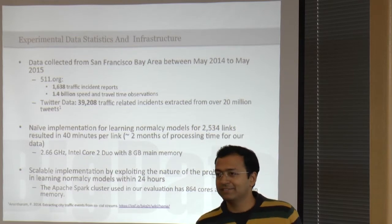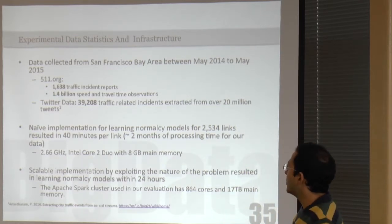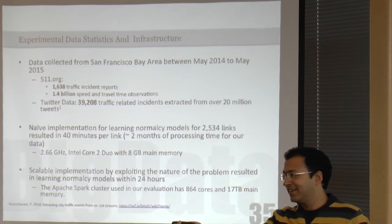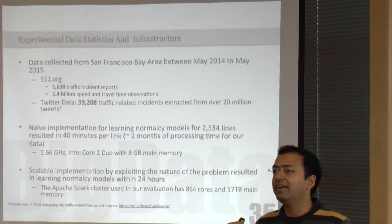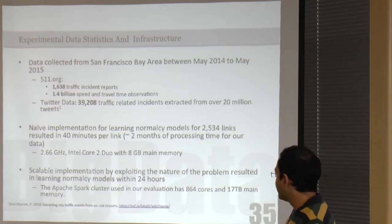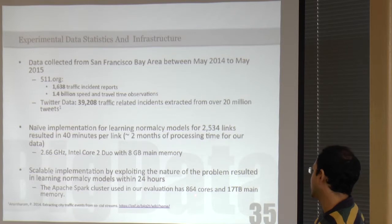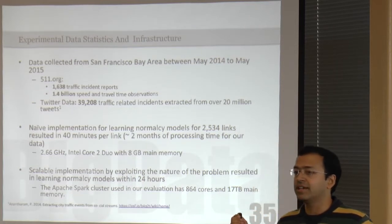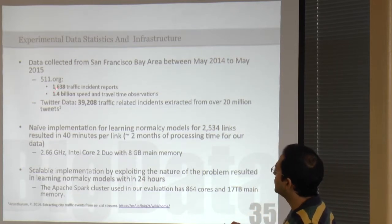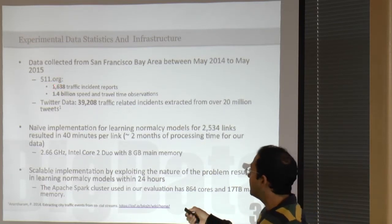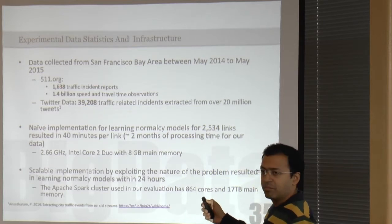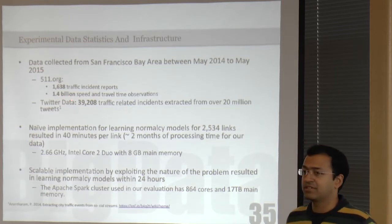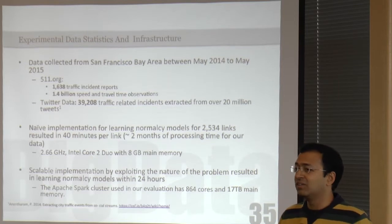We spoke about big data and stream reasoning. I just want to emphasize some of the data challenges we had. Surendra in the audience was instrumental in implementing this on Spark. We have a very large cluster with around 800 cores and 17 terabytes of main memory — without this implementation, we couldn't have evaluated for the size of data we have. We have around 1,600 incident reports from 511. Sensor data is really huge: we have 1.4 billion speed and travel time observations. We extracted around 39,000 traffic-related events for an entire year — all this data is from May 2014 to May 2015.